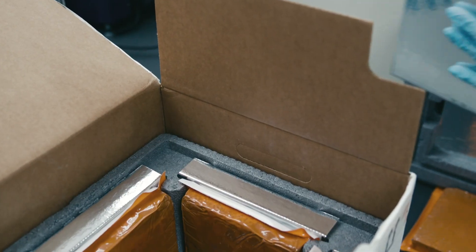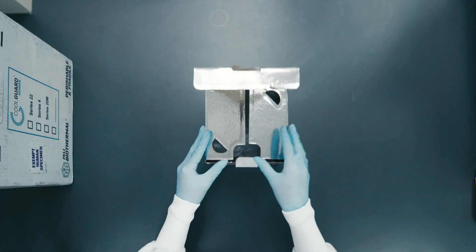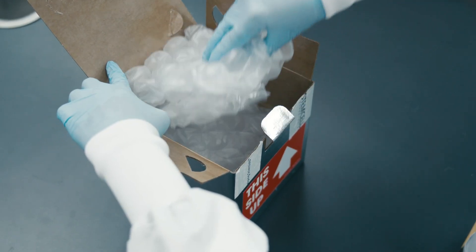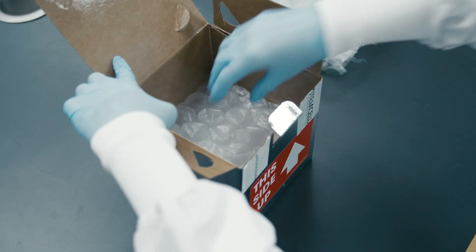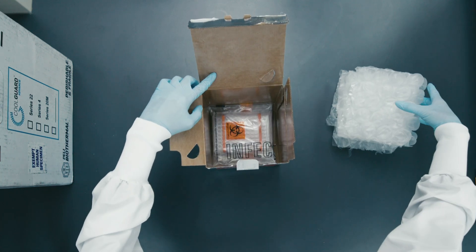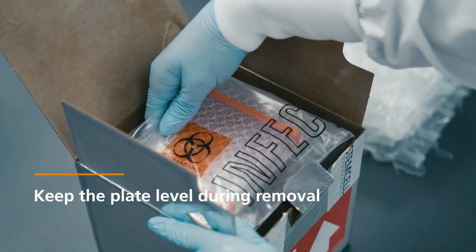The plate containing neural organoids is located at the bottom of the inner box. It is secured by multiple layers of bubble wrap. Keep the plate level during removal.